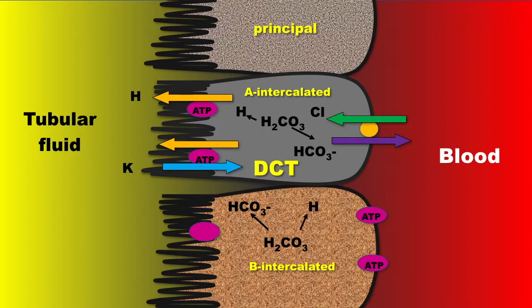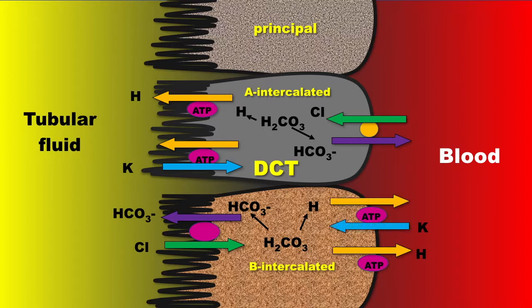The secretion of hydrogen by the late distal tubule accounts for only about 5% of the total hydrogen secreted. However, unlike the proximal tubule, the distal nephron can increase hydrogen concentration to as much as 900-fold in the collecting tubule.